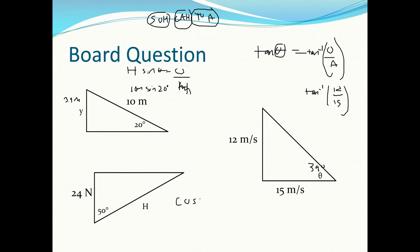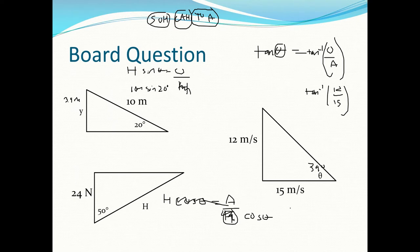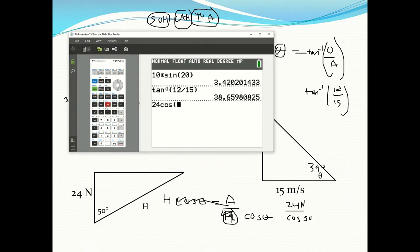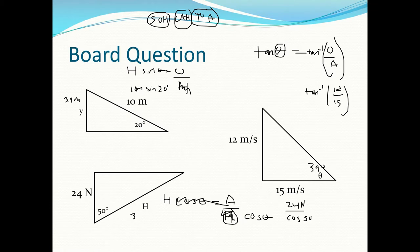For the third problem, we have adjacent and hypotenuse, so we use cosine: cos θ = adjacent/hypotenuse. Rearranging gives hypotenuse = adjacent/cos θ = 24 newtons / cos(50°). Typing that into the calculator gives 37 newtons (two significant figures). That's how you do trig.